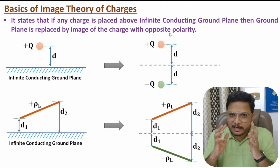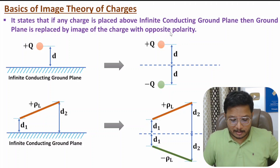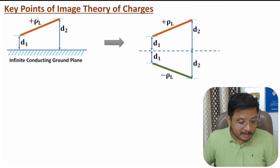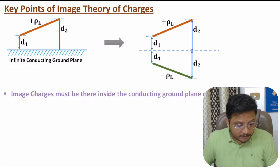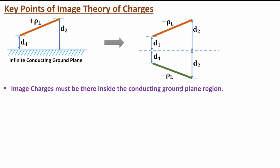It is not that straightforward — there are a few essential key points to understand. The first key point states that image charges must be placed inside the conducting ground plane region. So the image charge must be located within the infinite conducting ground plane region.